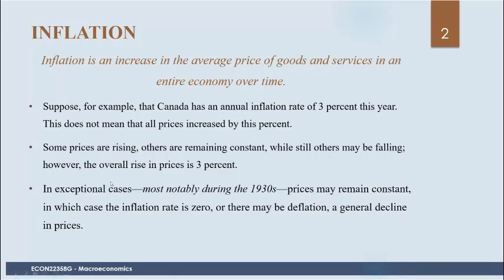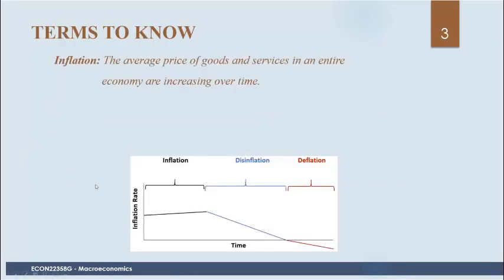Now, there are some terms we should sort out here. Inflation is when the average prices of goods and services in an entire economy are increasing over time. So inflation means the percentage change in the price index is positive — that means prices have increased. If the percentage change in the price index is increasing over time, we call that inflation.